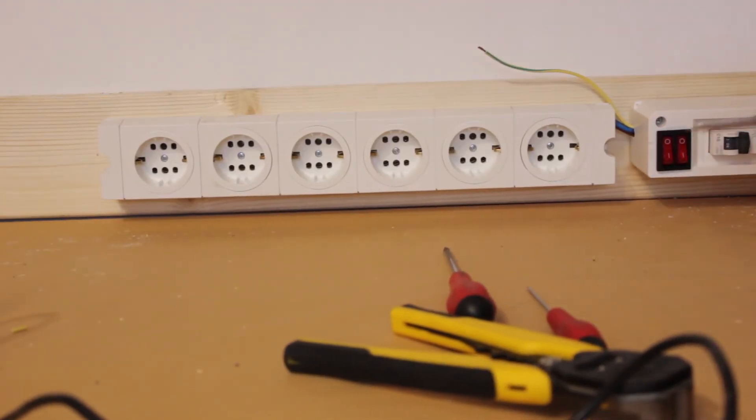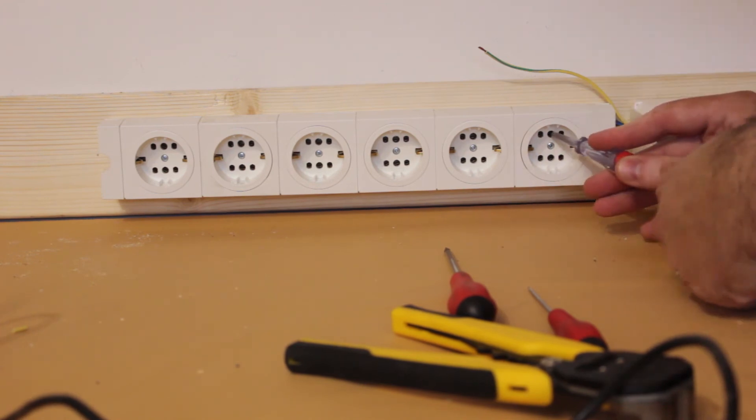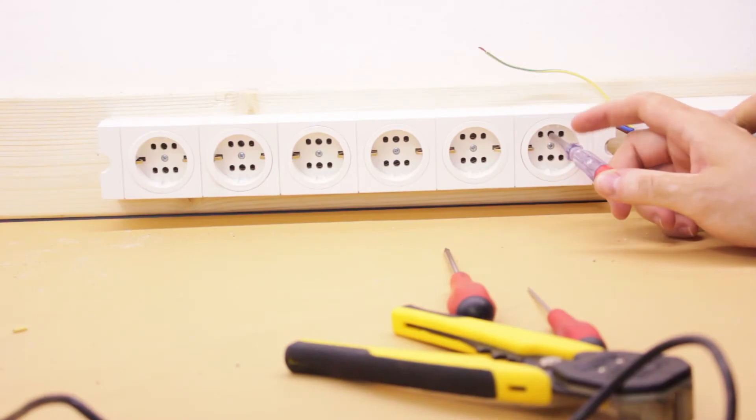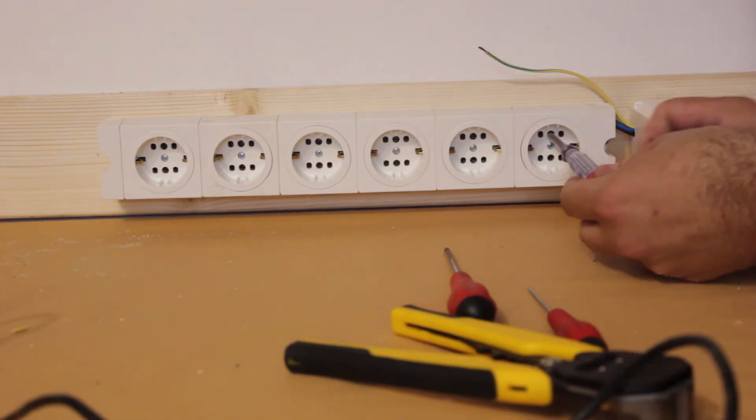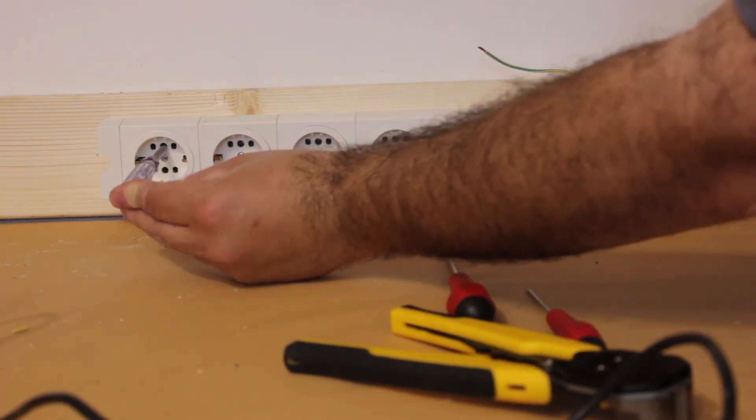I then tested that both live and neutral did not short and that the switch and breaker worked. That ground wire is intended to stick out and will be connected to something in part 3 of this build.